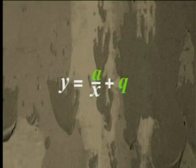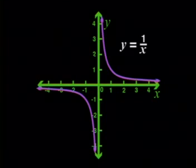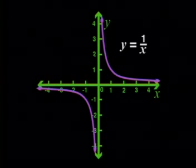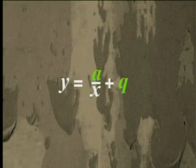Now we are ready to study the relationship between this function and other functions of the form y equals a over x plus q. In this graph, we kept a equal to 1 and q equal to 0. We need to investigate what happens to the graph if we change the value of a or q in this formula. But that's another lesson.